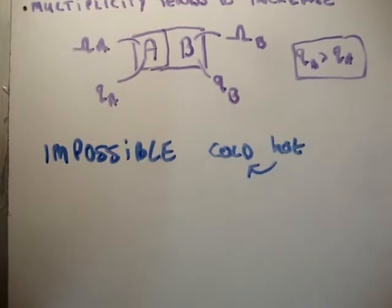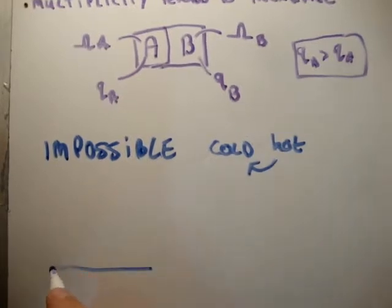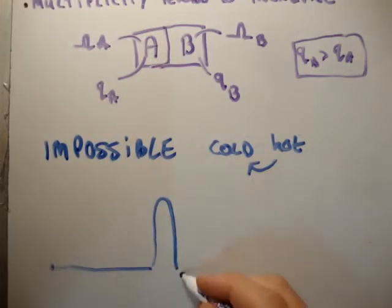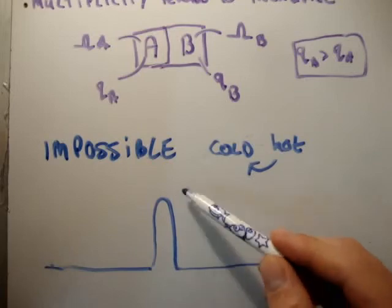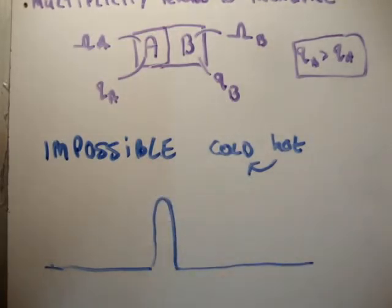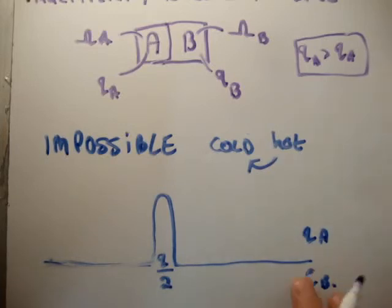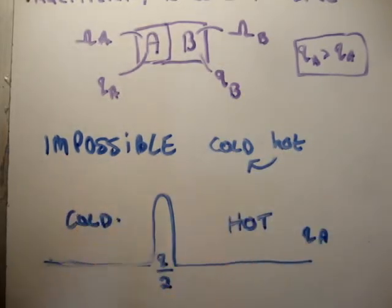Just to say it once more: the multiplicity forms a Gaussian, and to draw even from the tail into the center on paper would take thousands of kilometers for a peak that's just a centimeter wide. The system is most likely to be in that peak state — half the total energy in each body. The probability of the system being colder than equilibrium is zero, and the probability of it being hotter than equilibrium is also zero.